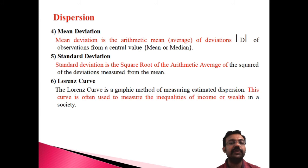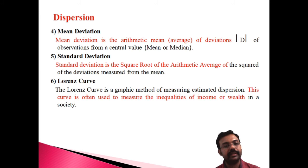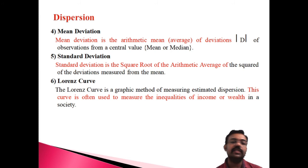The fifth measure is standard deviation. Standard deviation is the square root of the arithmetic mean of the squared deviations from the mean — that is, the square root of (X − X̄)². The quantity (X − X̄)² itself is the variance, and the square root of the variance is the standard deviation.